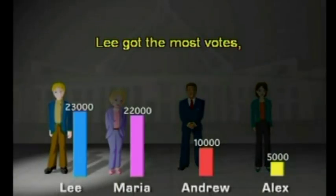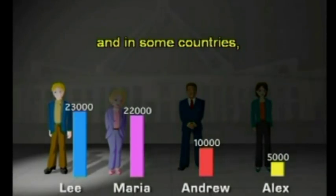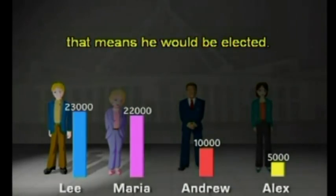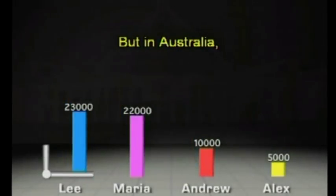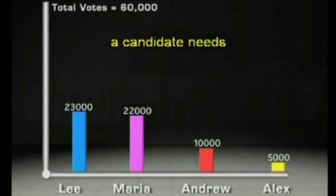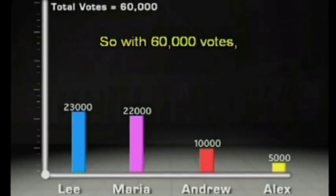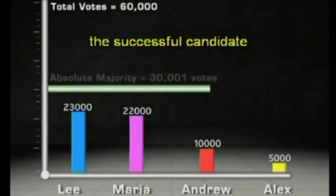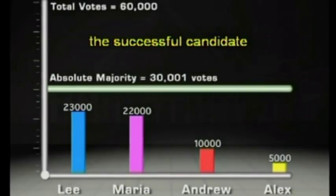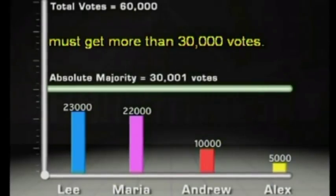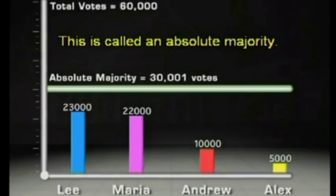Lee got the most votes, and in some countries that means he would be elected. But in Australia, a candidate needs to get more than half of the total formal vote. So with 60,000 votes, the successful candidate must get more than 30,000 votes. This is called an absolute majority.